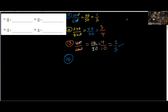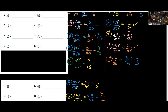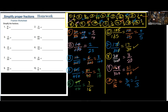Number 14 — we have 64 over 100. I can use 4: 4 into 64 is 16, 4 into 100 is 25. So the answer is 16 over 25, not 1 over 2. The submitted answer is not correct.